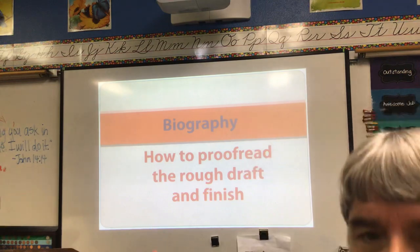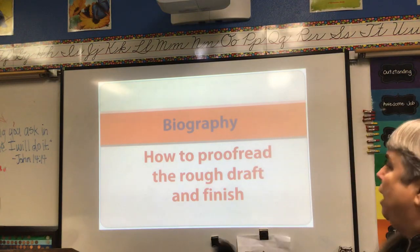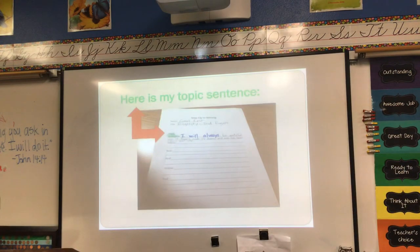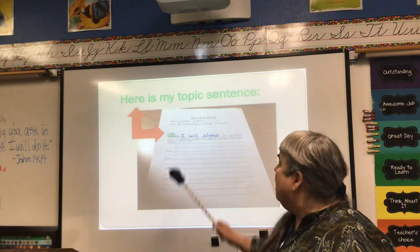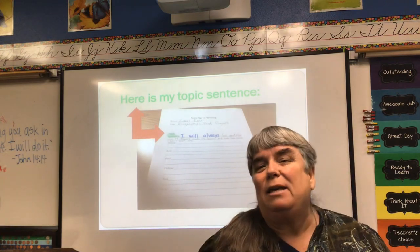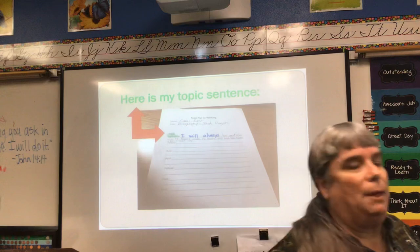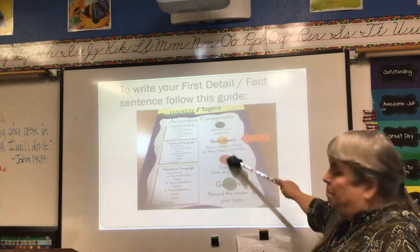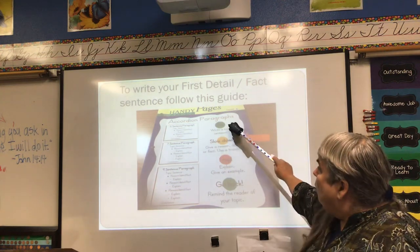Let's talk about how to get this whole Step Up to Writing rough draft finished and how to proceed from there. This is called how to proofread the rough draft and finish. So you remember, here's my topic sentence — my topic sentence is green — and my sample is about Fred Rogers. This is just a little bit of review about how to get started. Now let's look at my final rough draft and see if I made some mistakes and how to make it better.